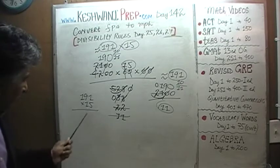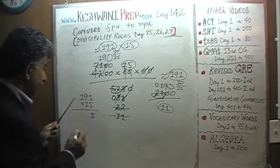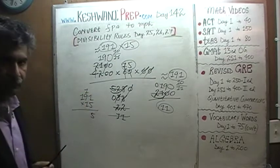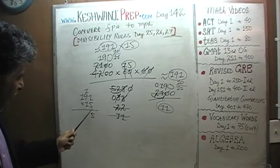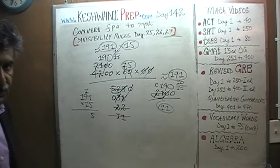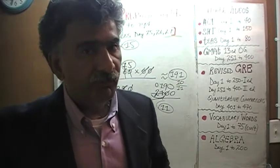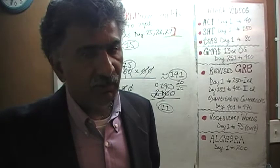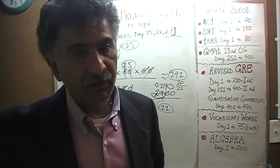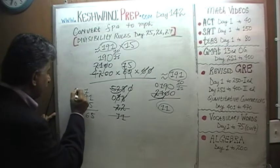5 times 1 is 5, 5 times 9 is 45, 5 carry 4, 5 times 1 is 5 plus 4 is 9. 15 times 1 is 15, 5 carry 1. 15 times 9 is how much? How much is 15 times 9? I know 15 times 10, that I know. 15 times 10 is 150, therefore 15 times 9 will have to be 15 less than 150, that is 135.